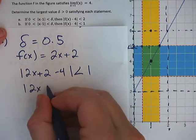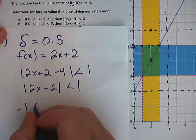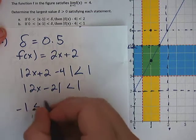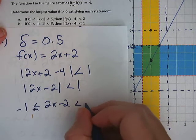So 2x minus 2 is less than 1. Solve that. Negative 1, not less than or equal to, just less than, 2x minus 2 less than 1.